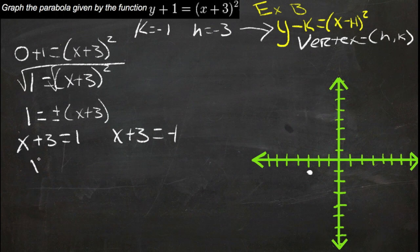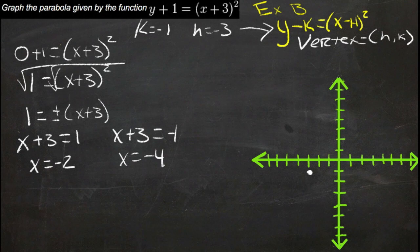If we subtract 3 from both sides here, we get x equals negative 2, and here we get x equals negative 4.